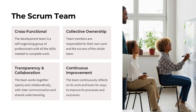The Scrum team is a cross-functional group of professionals who have all the skills needed to complete the work. Team members take collective ownership of their work and the overall success of the team. The team works together in a transparent and collaborative way, with clear communication and a shared understanding. The team continuously reflects on its processes and looks for ways to improve how it works, helping the team be agile, responsive, and continuously enhance their performance.